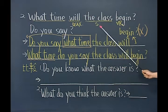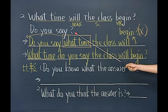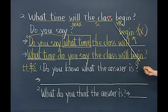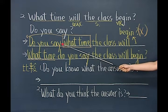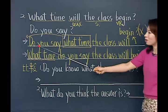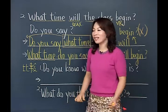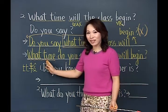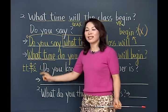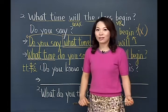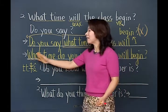俗话说知己知彼才能百战百胜。这个句子要记住：What time will the class begin，Do you say合在一起变成「你说这堂课会是几点开始呢」，我要的答案一定是几点，绝对不会是do助动词开头，因为只要是助动词开头的问句就要回答Yes/No。一定是what time这个疑问词来开头，因为我想知道的是时间。